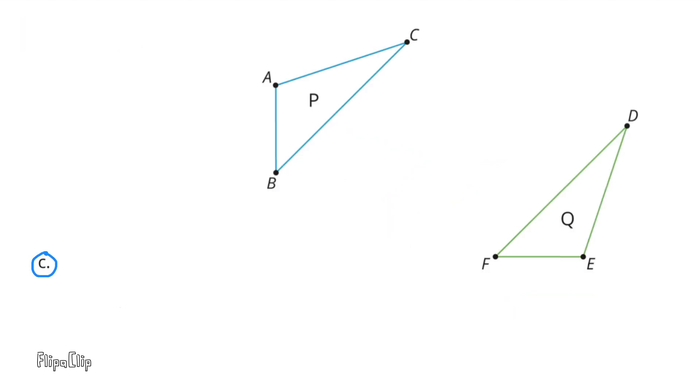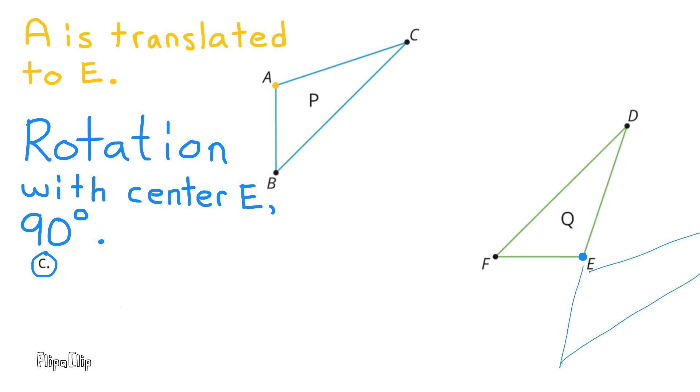C. A is translated to E. 90 degree rotation with center E. Reflected over line EF.